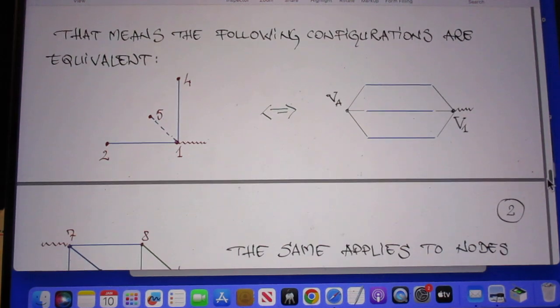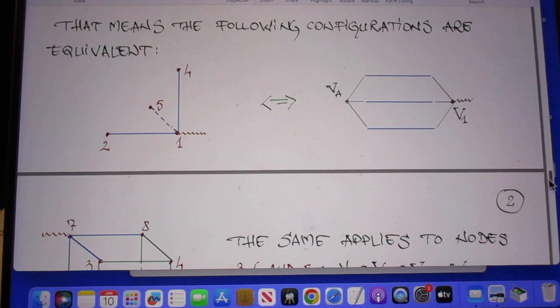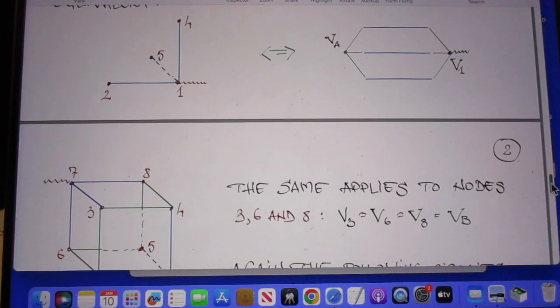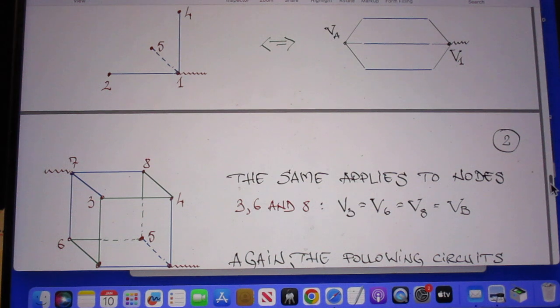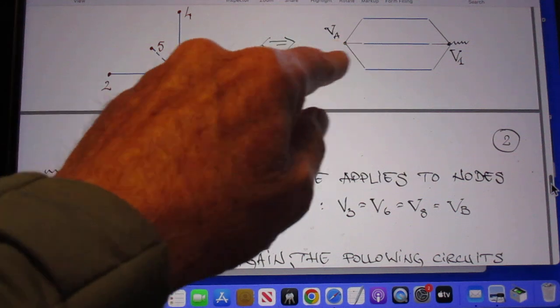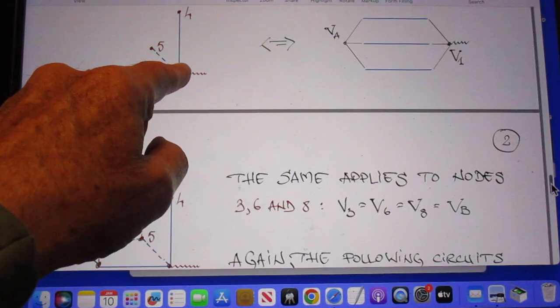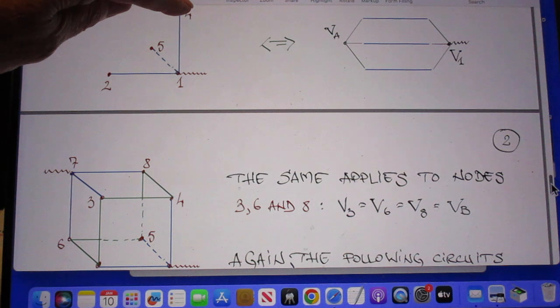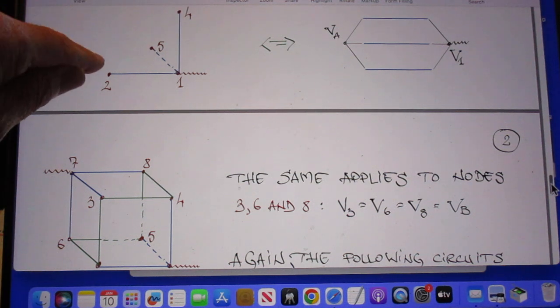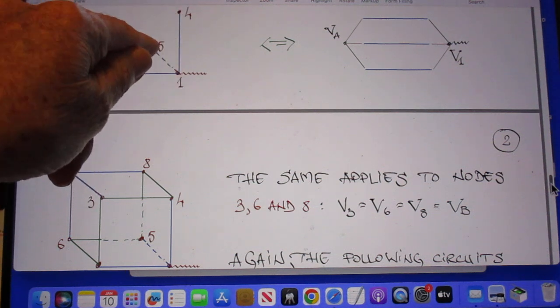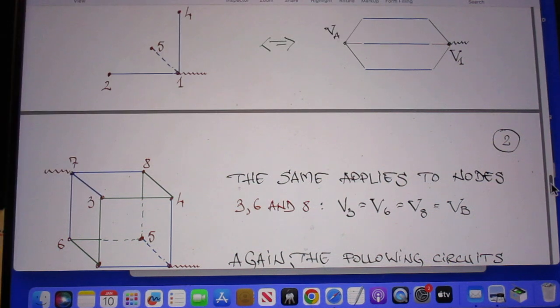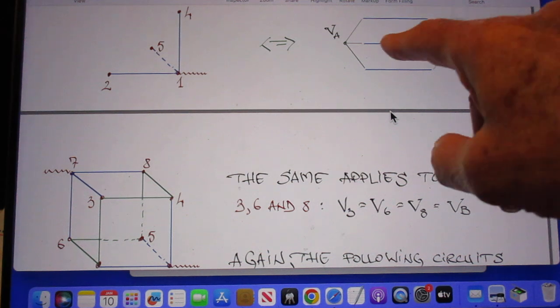And so he replaces that now by three resistors. So he comes in here at V1. He enters here at VA and he enters here at VA and he enters there at VA. So he replaces all three by one resistor because they all come out to be at VA.